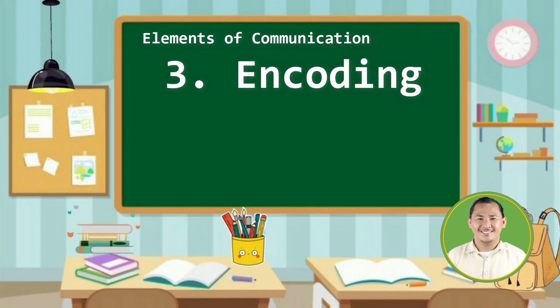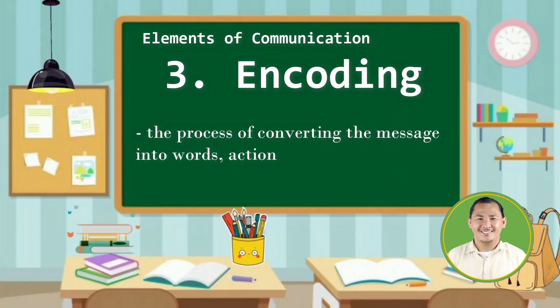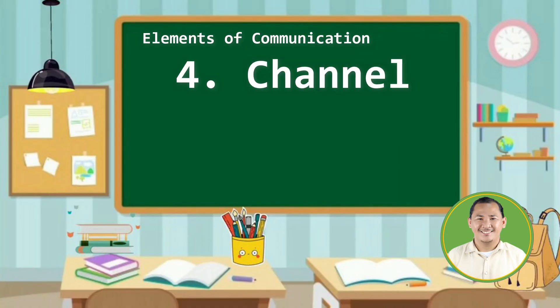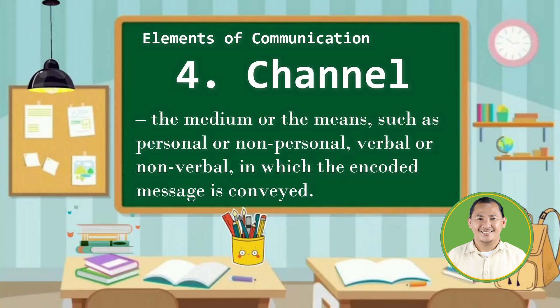Number three, encoding. This is the process of converting the message into words, actions, or other forms that the speaker understands. Encoding means you convert the message into different forms, be it in words, in actions, or anything that the speaker can understand. Number four, channel. The channel is the medium or the means — such as personal or non-personal, verbal or non-verbal — in which the encoded message is conveyed.